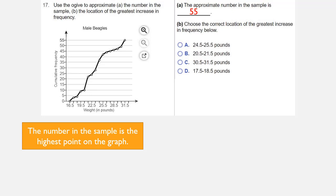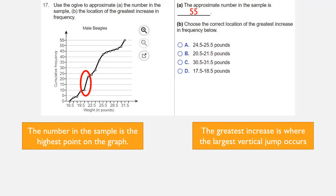Choose the correct location of the greatest increase in frequency below. Well, the greatest increase is where the largest vertical jump occurs on the graph, and that vertical jump occurs right here. You can see I've circled it with the red oval on the graph.